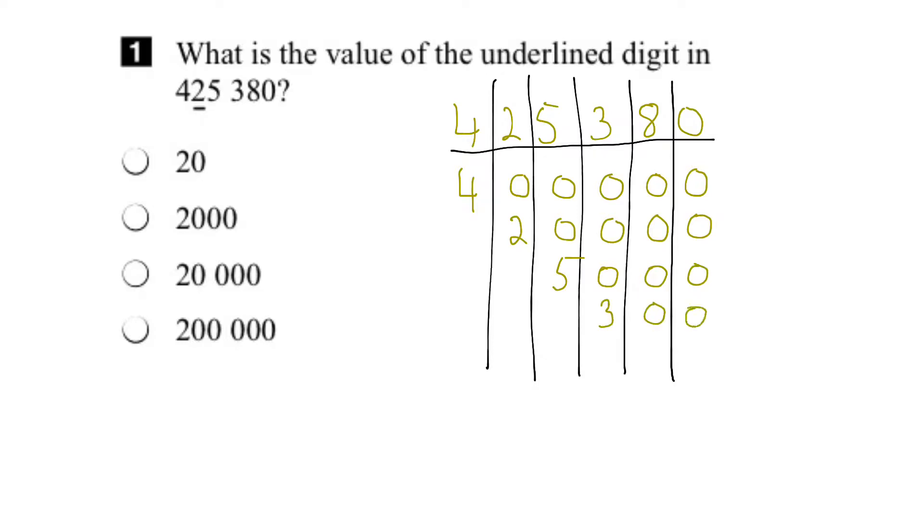3, add two zeros, that's 300, and then 8. And a zero makes it 80. So this number here is made up of 80 plus 300 plus 5,000 plus 20,000 plus 400,000.